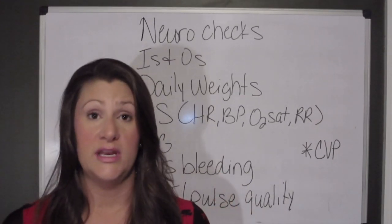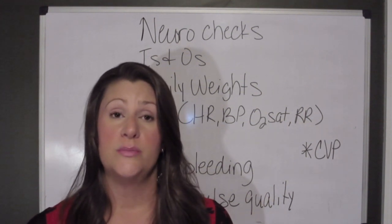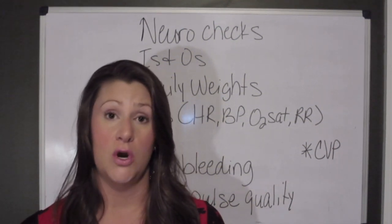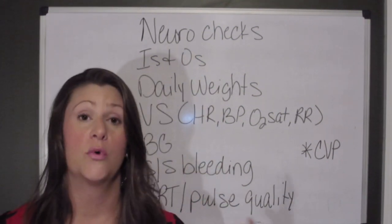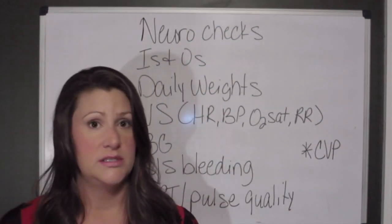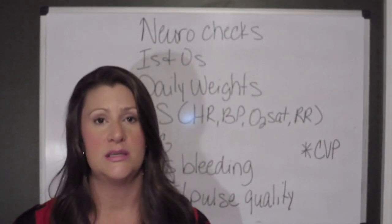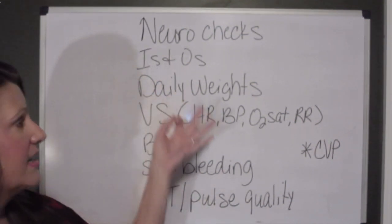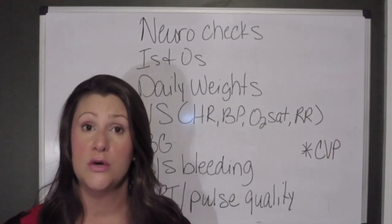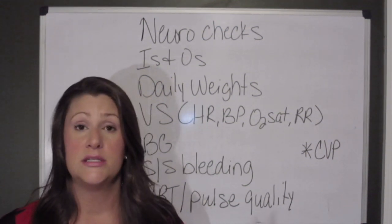As compensatory mechanisms start to take effect, you will begin to see early signs and symptoms, so you want to focus your assessments and spot them early. Important assessments for all types of shock include neurochecks — restlessness, change in mental status, and change in level of consciousness are among the earliest signs of hypoxemia. Intake and output monitoring is especially important with hypovolemic shock, but also with cardiogenic and septic shock, due to the potential for decreased renal perfusion.